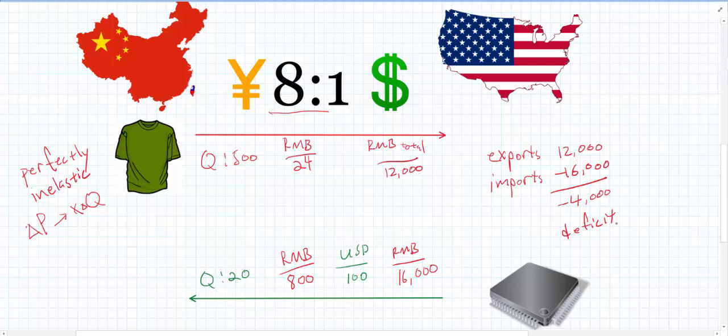So now from exports China makes 12,000 RMB, but from imports China pays out 16,000 RMB, for a net result of negative 4,000 — in other words, a deficit. Most countries devalue their currency to try to improve their current account conditions, but we see here that if the Marshall Lerner condition is not satisfied — demand is relatively inelastic, and in this case perfectly inelastic — then it actually has the opposite effect, causing a deficit rather than a surplus.